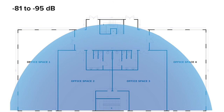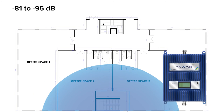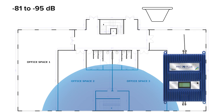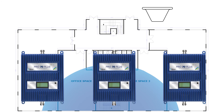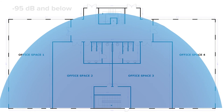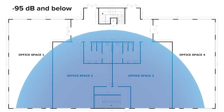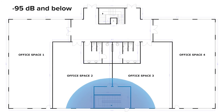Negative 81 to -95 dB means coverage for all bands decreases significantly. The amplifier may only be able to support one broadcast antenna and cover less than 5,000 square feet total. Consider adding more amplifiers, or pinpoint which frequencies are most important to the customer and determine a solution accordingly. Negative 95 dB and below doesn't leave you with much signal to work with — a signal amplifier system will still work, but coverage areas will be dramatically impacted. You'll need to experiment with adding boosters and the placement of antennas to fulfill the customer's needs.